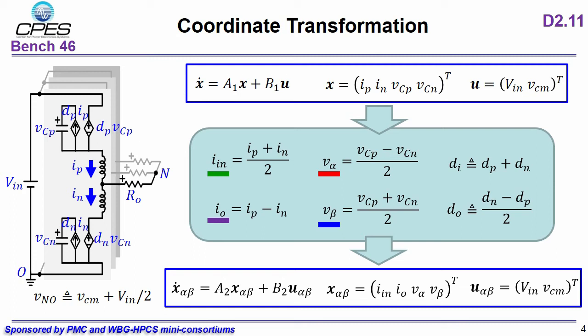We can do a coordinate transformation. Originally, we have upper arm current and lower arm current. Now, we know that one part of current flows to the load and the other part doesn't go to a load. So we can extract these two currents, and we can extract V-alpha and V-beta through state plane analysis. Finally, we define two decoupling duty cycles so we can have a new state equation.